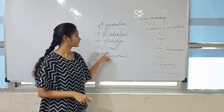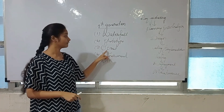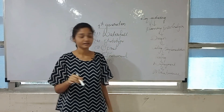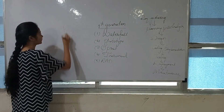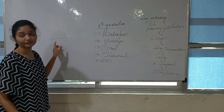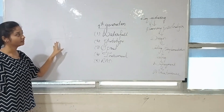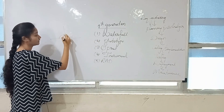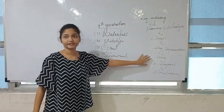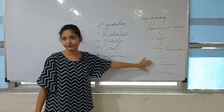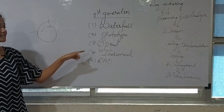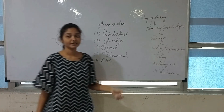The next type is the Spiral model — all these processes are done in a spiral way. After designing, coding, and testing, if it is successful we release it to market; if not, the process is repeated. It is done in a spiral wave, which is why it is named the Spiral model.